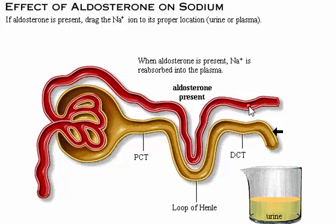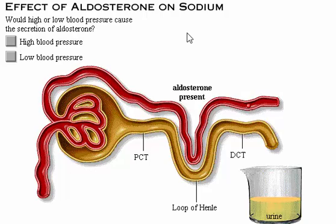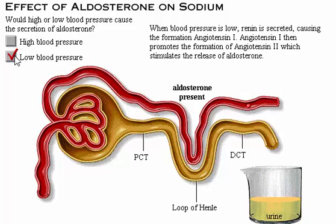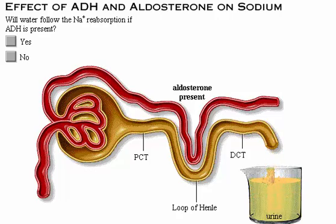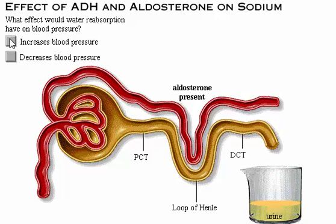When aldosterone is present, sodium is reabsorbed into the plasma. Note that although sodium can be reabsorbed in the late distal convoluted tubule and collecting duct, it is never secreted. When blood pressure is low, renin is secreted, causing the formation of angiotensin I. Angiotensin I then promotes the formation of angiotensin II, which stimulates the release of aldosterone. If antidiuretic hormone is present, water will follow the sodium from the filtrate to the plasma, and blood pressure will increase.